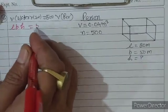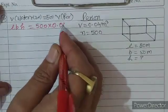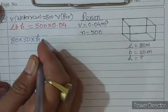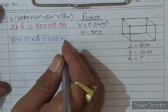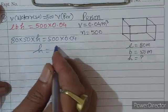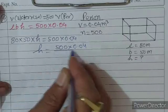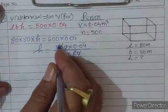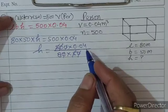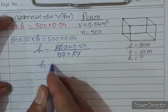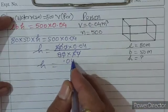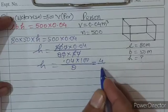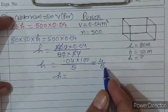L × B × H = 500 × 0.04। L = 80, B = 50, H = ?। 80 × 50 × H = 500 × 0.04 = 20। H = 20 / 4000 = 0.005 m। Meter से cm में convert करने के लिए × 100: 0.04 × 100 / 8 = 4/8।